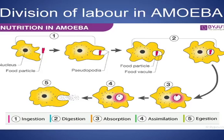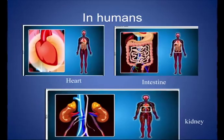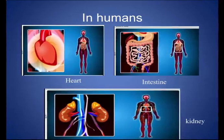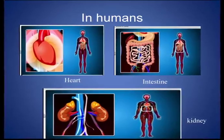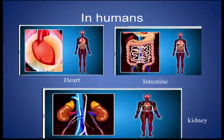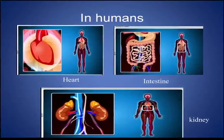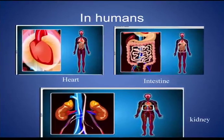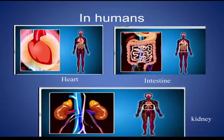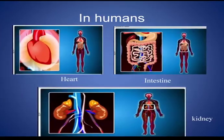On the other hand, different organs perform different functions in multicellular organisms. For example, the human body has a heart to pump blood, a stomach to digest food, and kidneys to excrete waste.